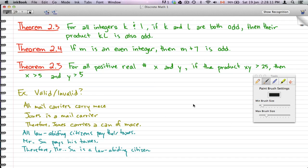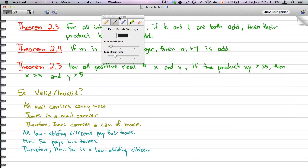So all mail carriers carry mace. Now mail carriers are those people that deliver your mail. So we'll represent that by MX, so it's a mail carrier. And carry mace, we'll define that by PX. Carry mace.